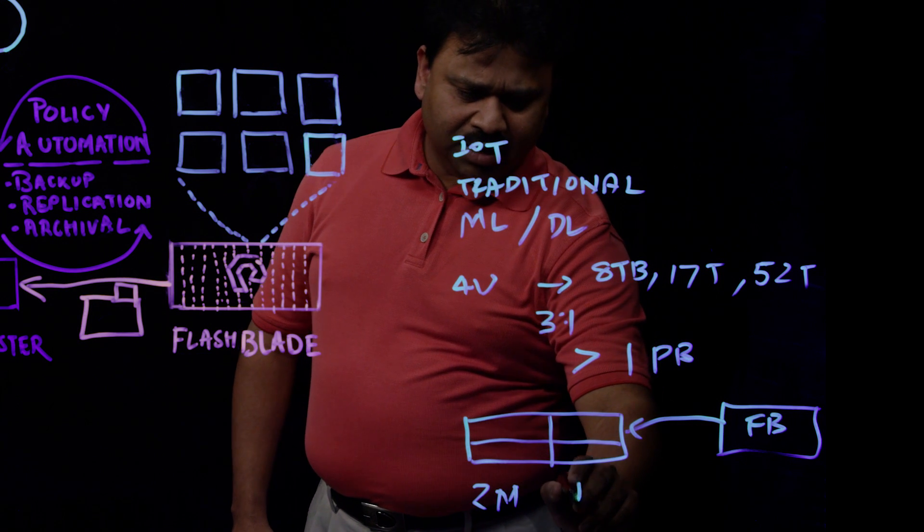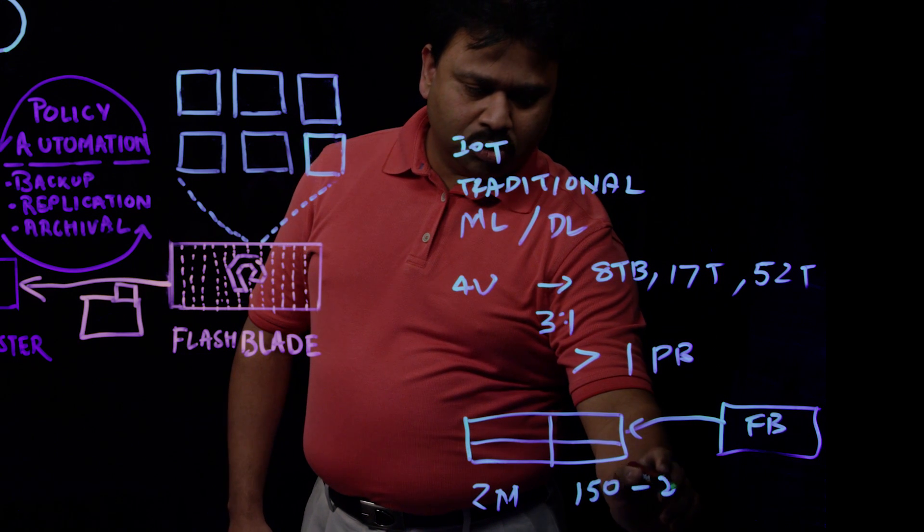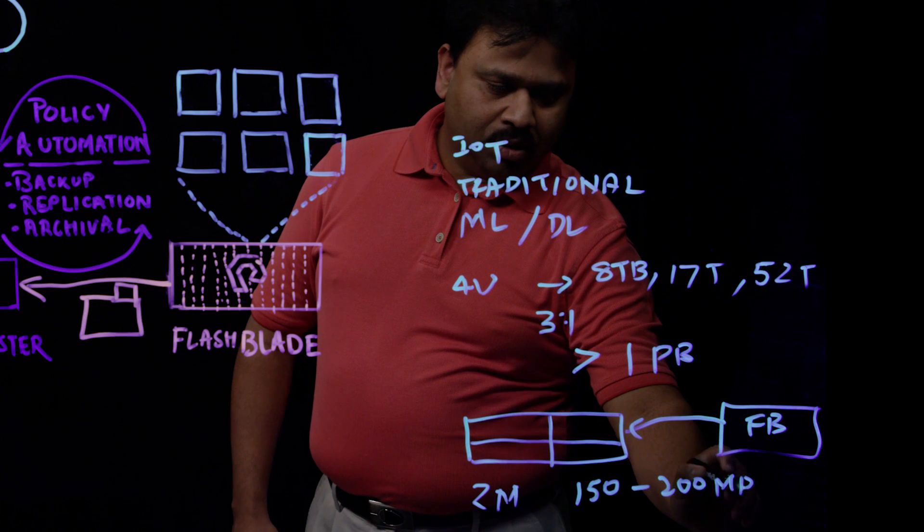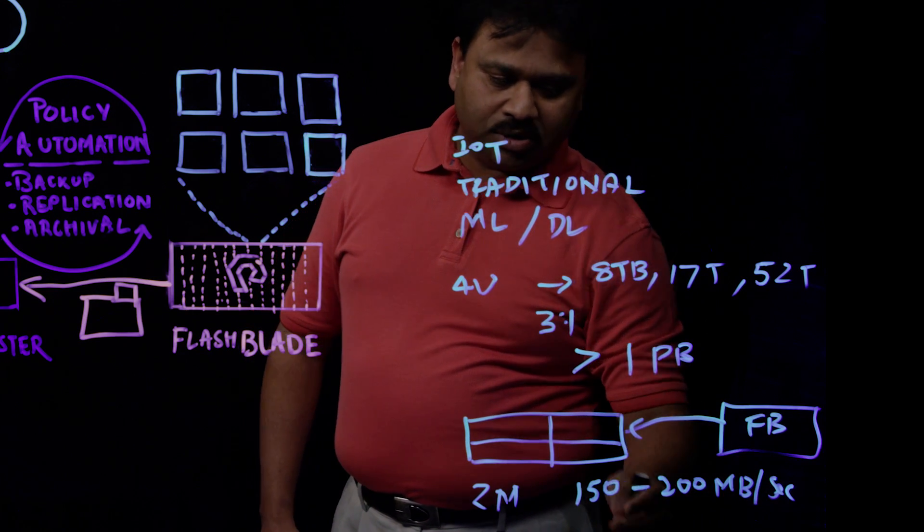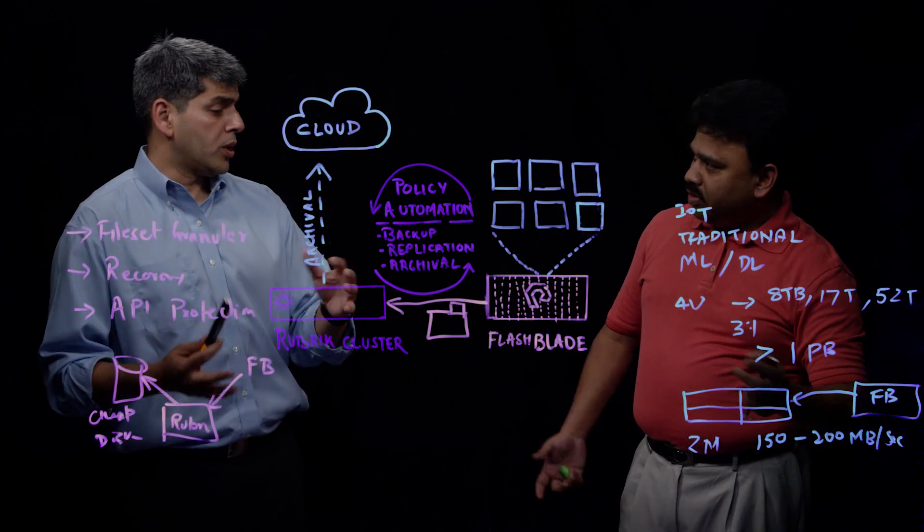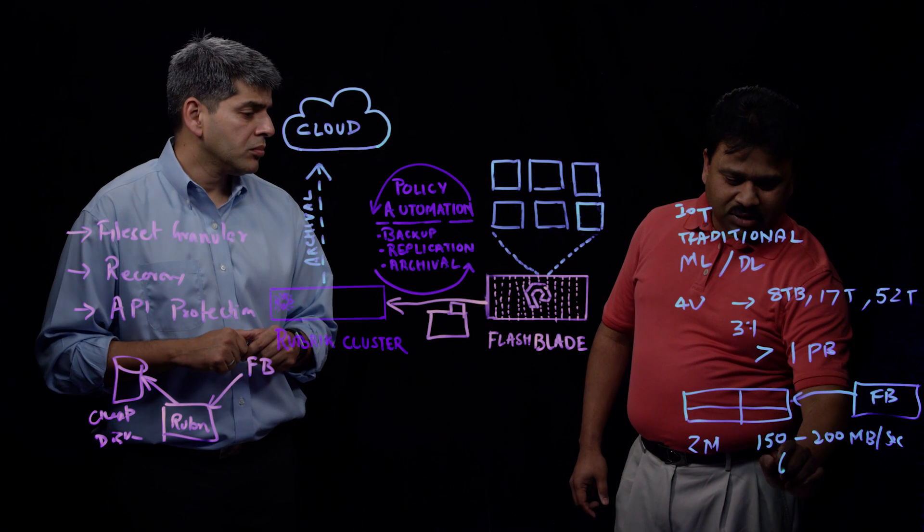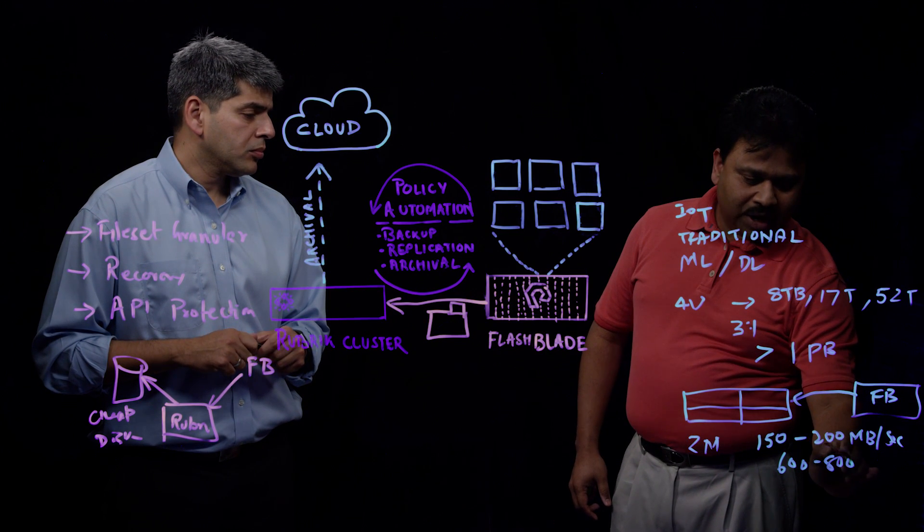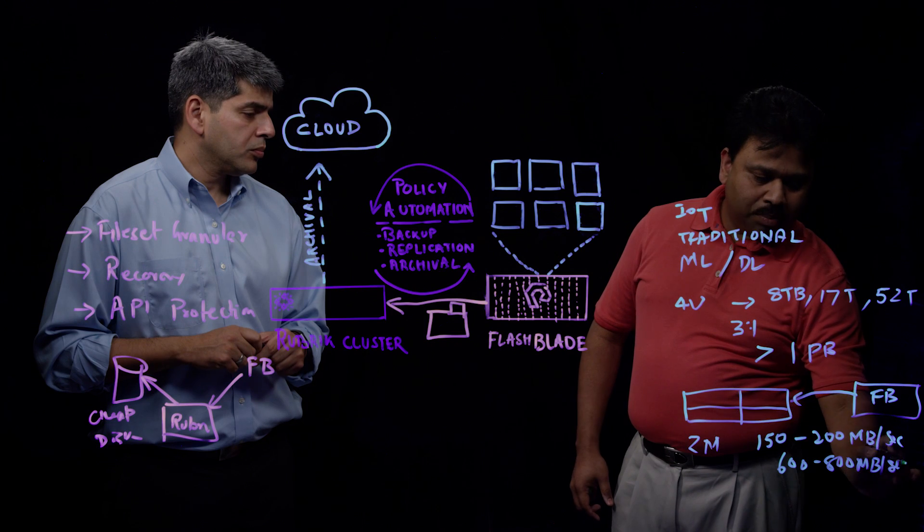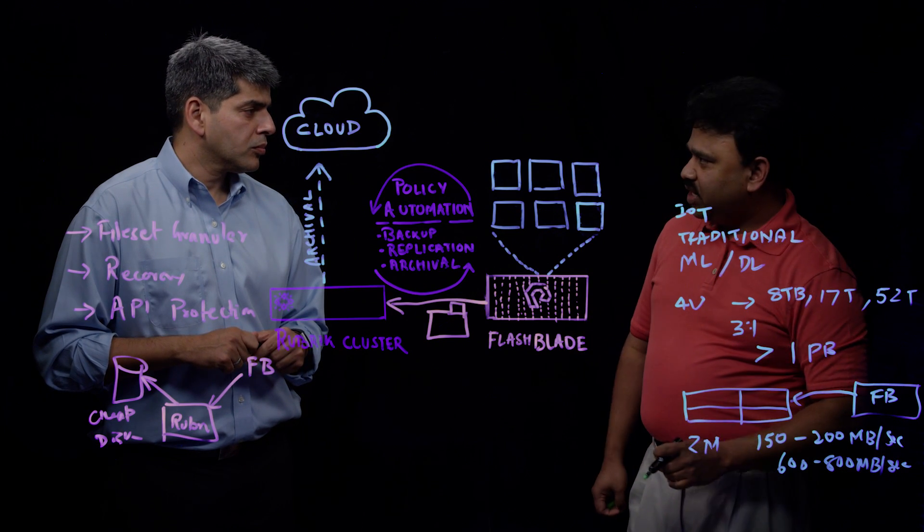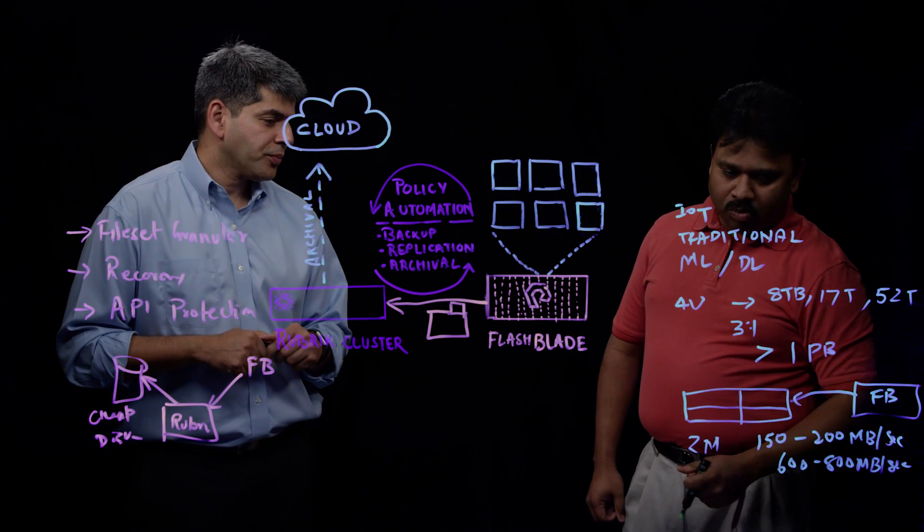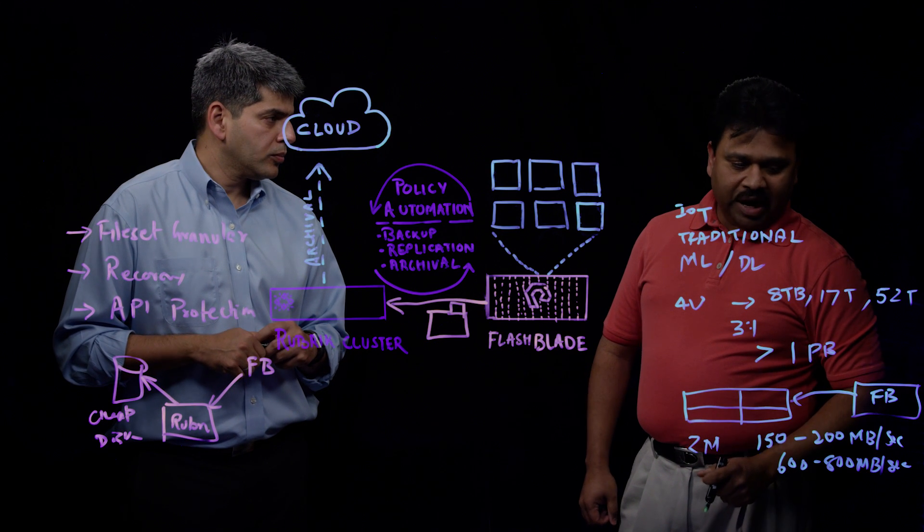We were able to achieve roughly 150 to 200 megabytes per second, that's bytes not bits, per second per node. So we were able to total roughly 600 to 800 megabytes per second with one brick we had. I know your system scales linearly by adding more bricks, we can drive more backup bandwidth.